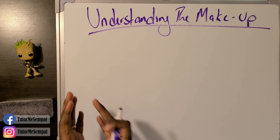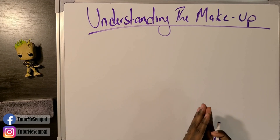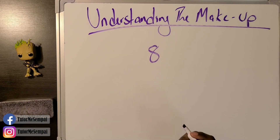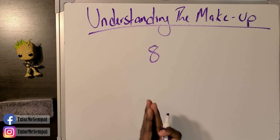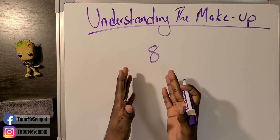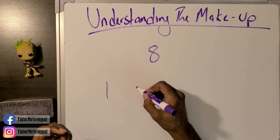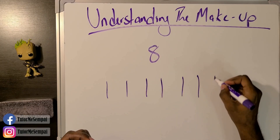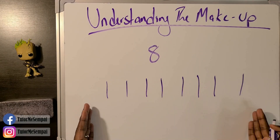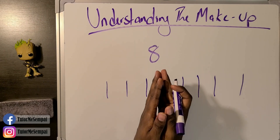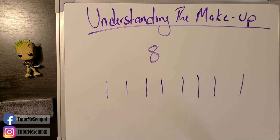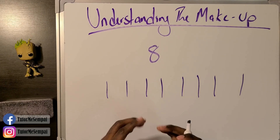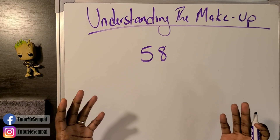Let's start with a very simple number: 8. What does 8 represent? Well, 8 represents eight ones. If you were to add up all these ones, you would have eight of them. So 8 represents eight ones — cool, simple.